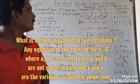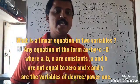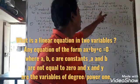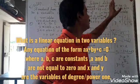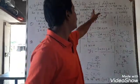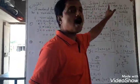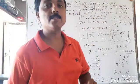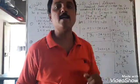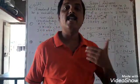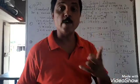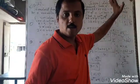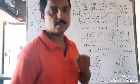You know that any equation of the form ax plus by plus c is equal to 0, where a, b, c are constants and x and y are variables of degree 1, is called a linear equation in two variables. But a should not be equal to 0 and b should not be equal to 0.